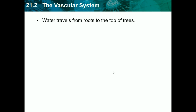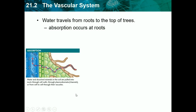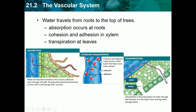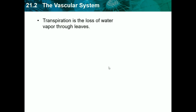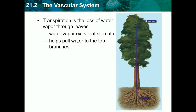Water travels from roots to the top of trees. Absorption occurs at the roots — the roots absorb minerals and water. Water and dissolved minerals in the soil are pulled into the roots through cell walls, through plasma membrane channels, or from cell to cell through their vacuoles, then cohesion and adhesion in the xylem pull the water up through the stem. Transpiration at the leaves is when the plant releases excess water through tiny holes on the bottom of the leaves — the leaf stomata. Transpiration is the loss of water vapor through leaves, which also helps pull water to the top branches.